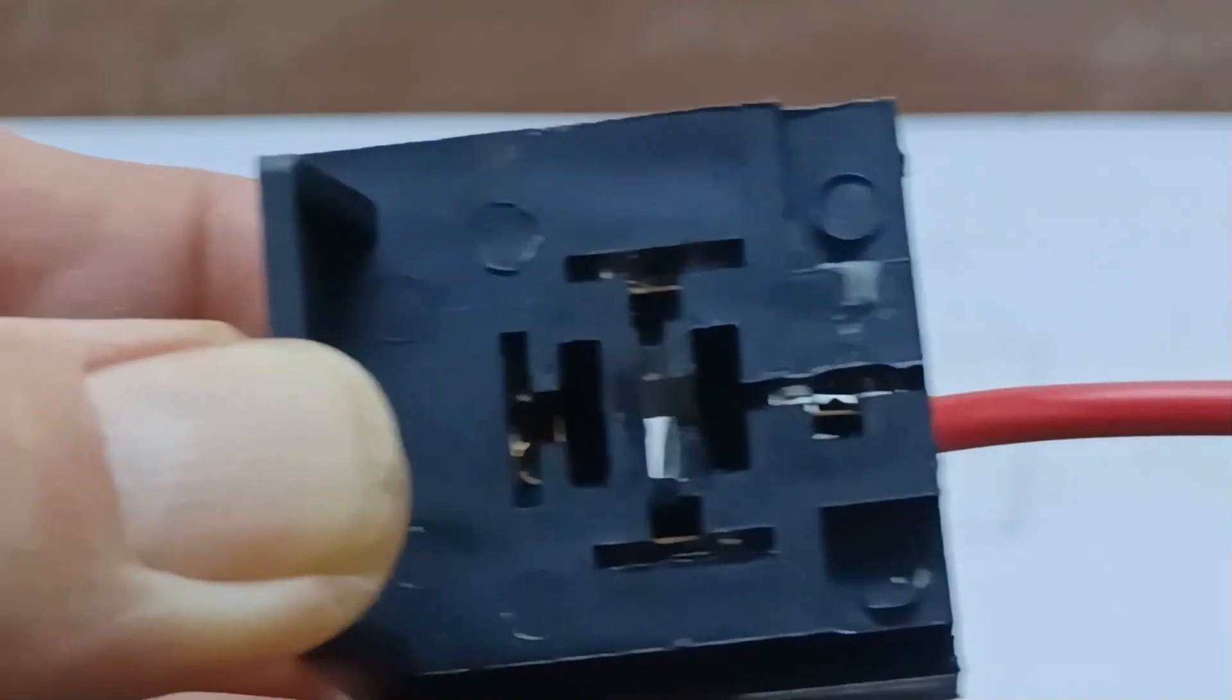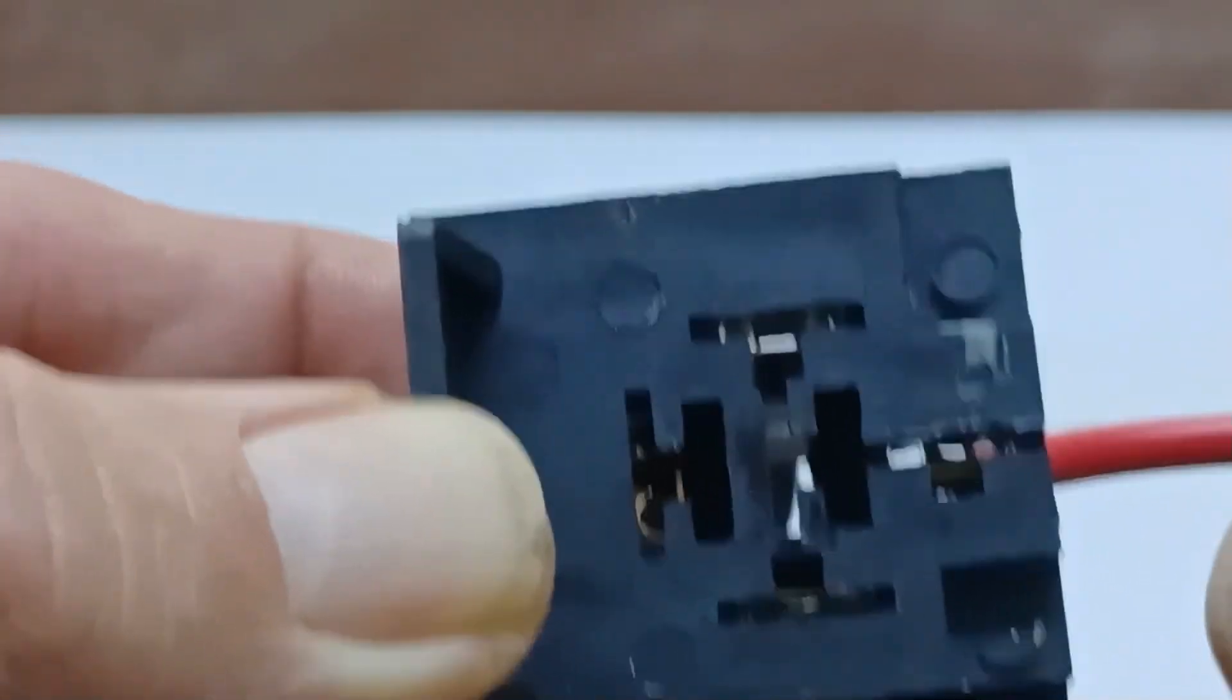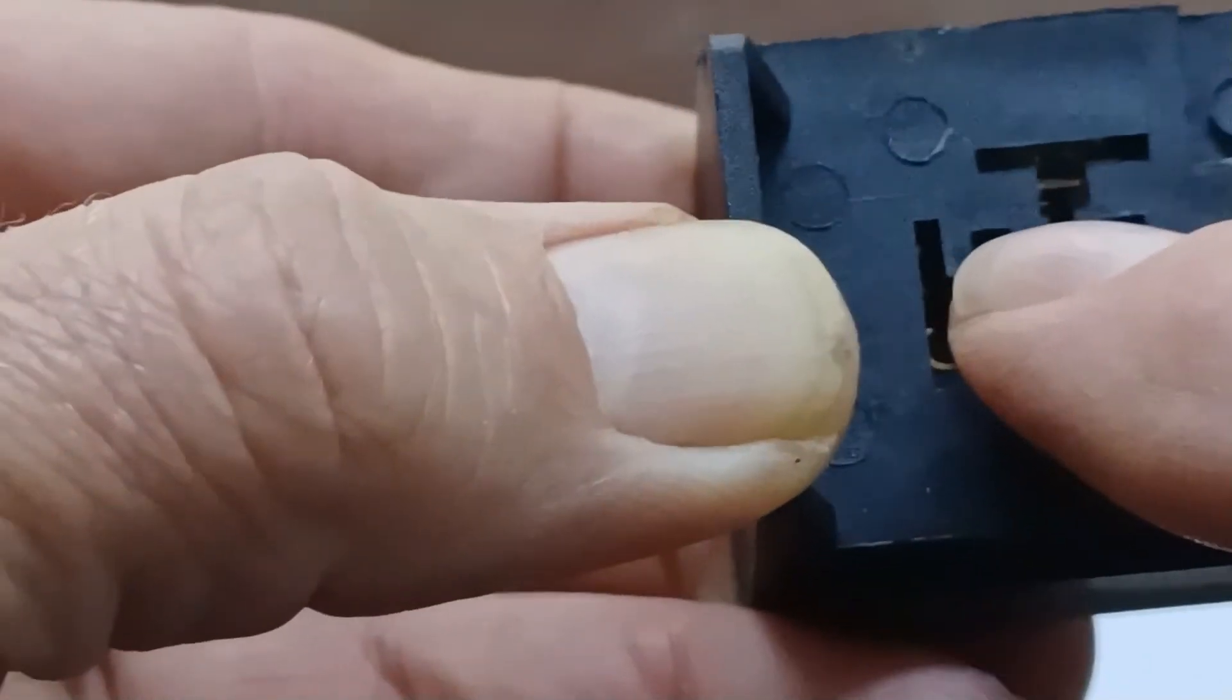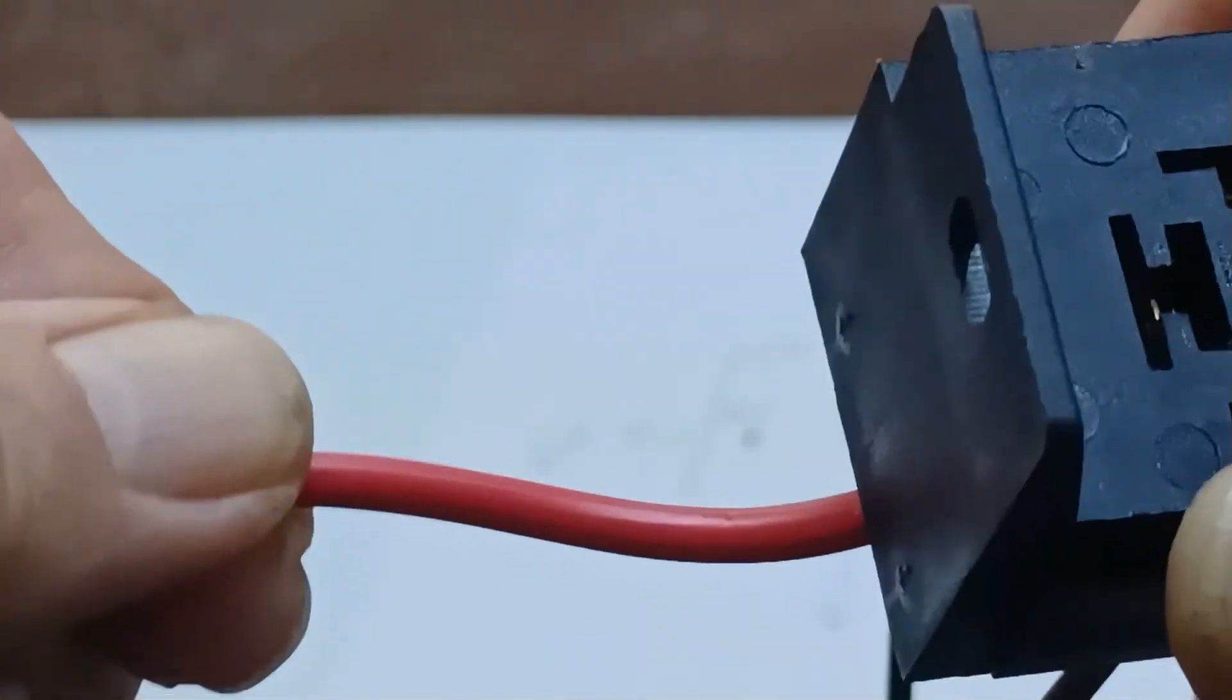So when I throw the switch, it triggers the relay and it takes our heavy gauge hot wire right here. It triggers that relay so it sends that 12 volts through to this red wire right here which goes out to my fan.